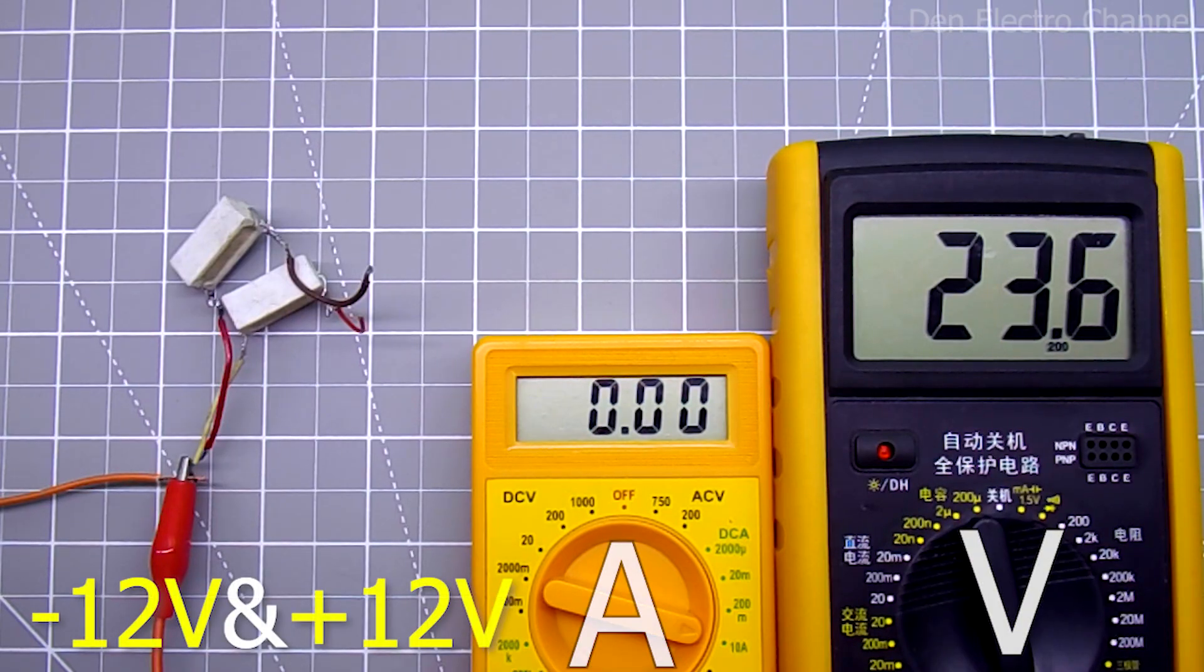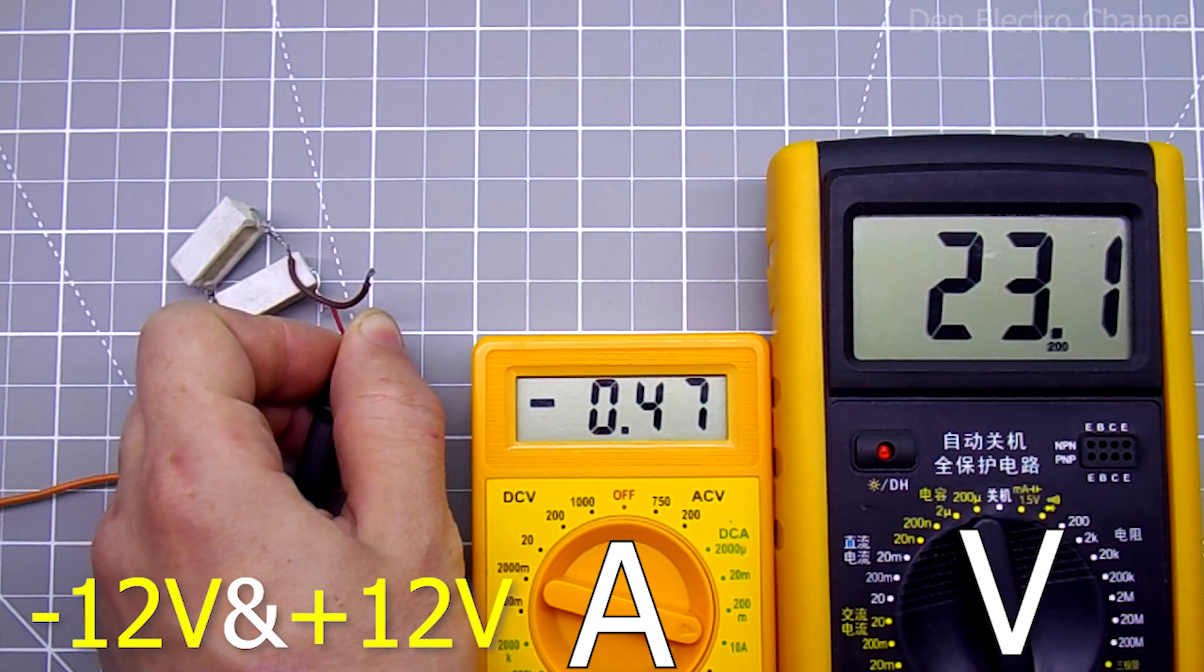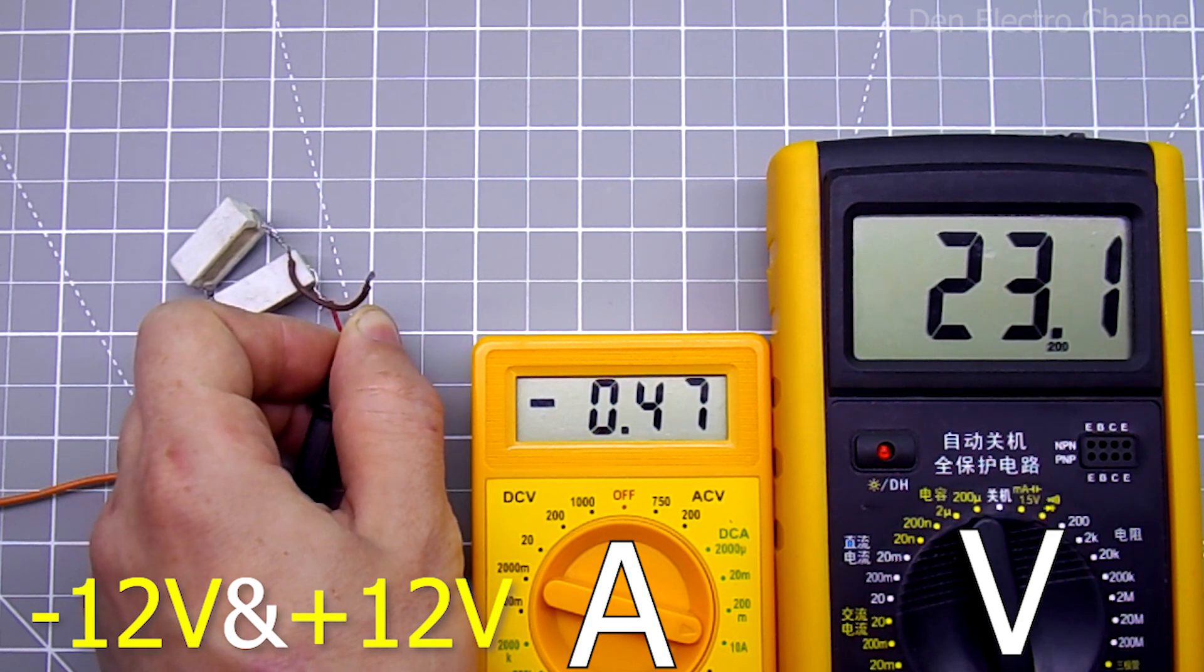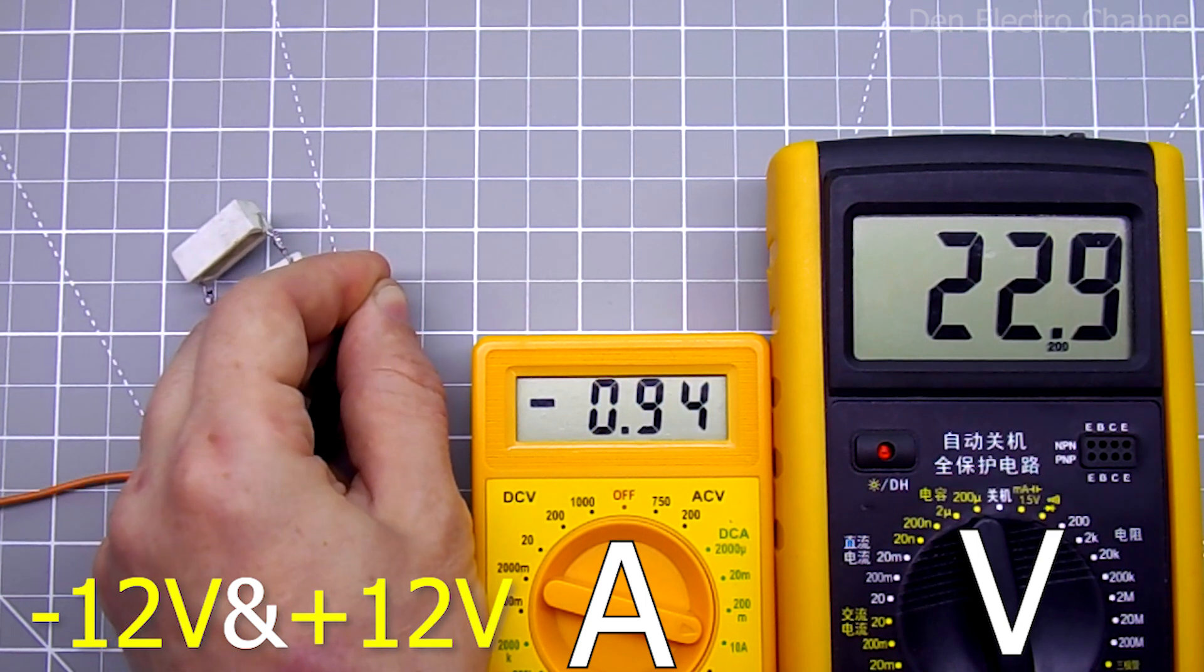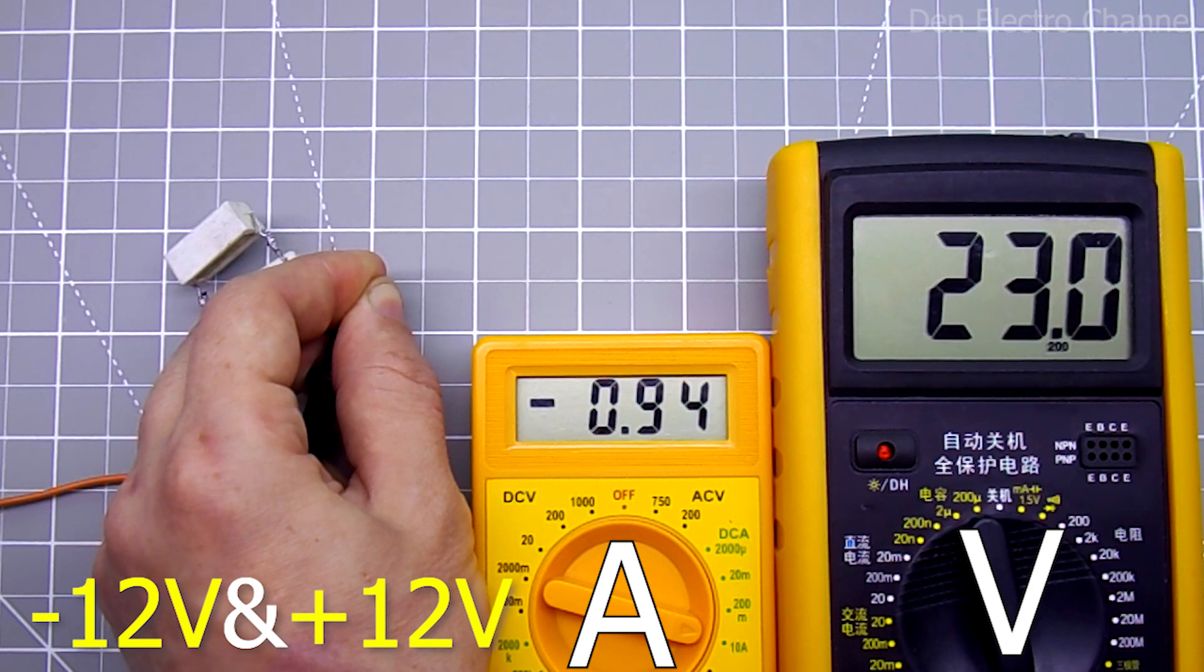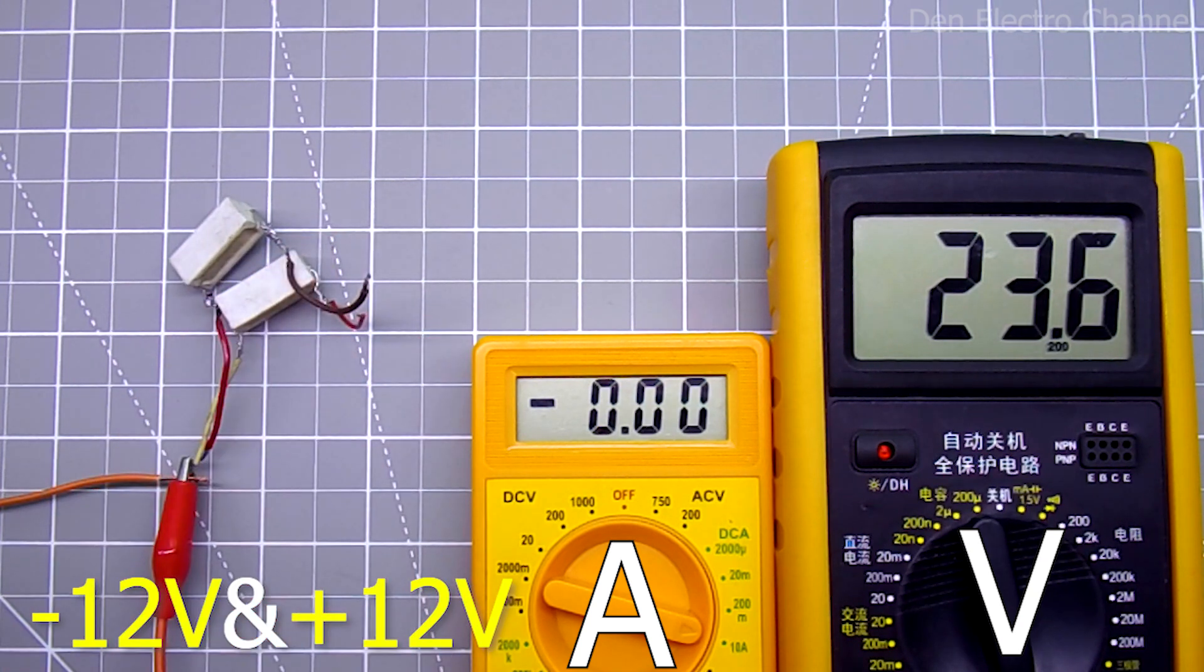And finally 24 volts. I used two resistors as a load. Current 470 milliamps, the voltage dropped by about half a volt. I will try to connect the second one. Current 940 milliamps. The voltage dropped to 23 volts. But you can't keep it like this for long, since the minus 12 volt line is designed for only half an ampere. The voltage here sags very little. The main thing is not to exceed the current characteristics of this line.